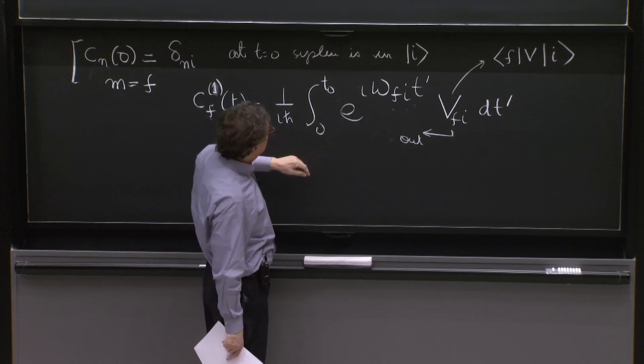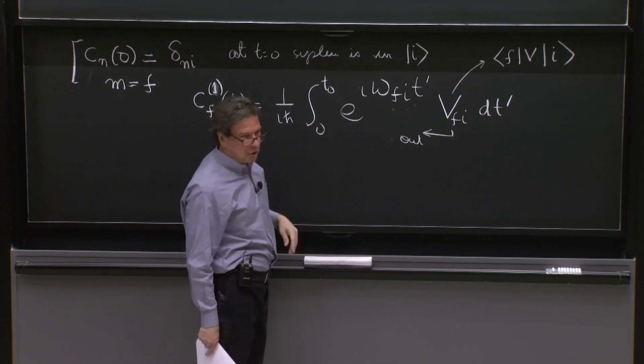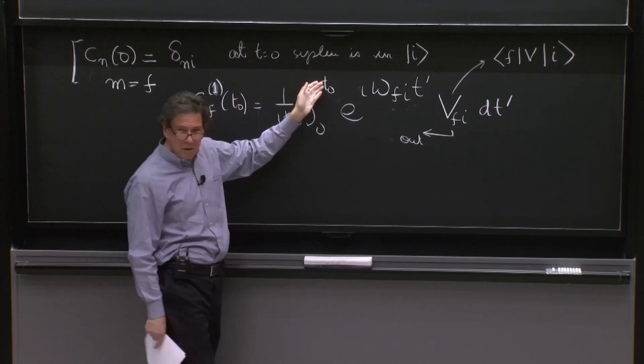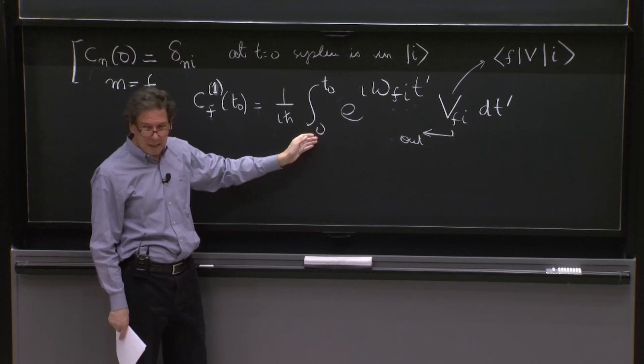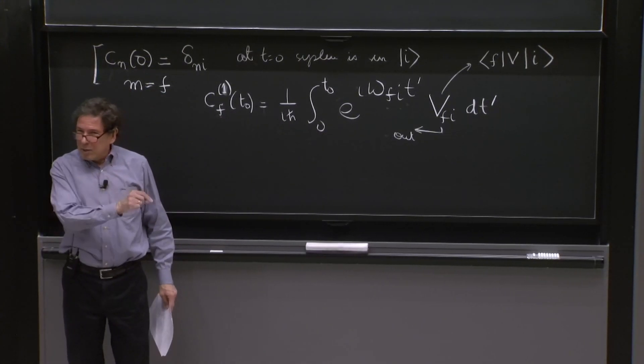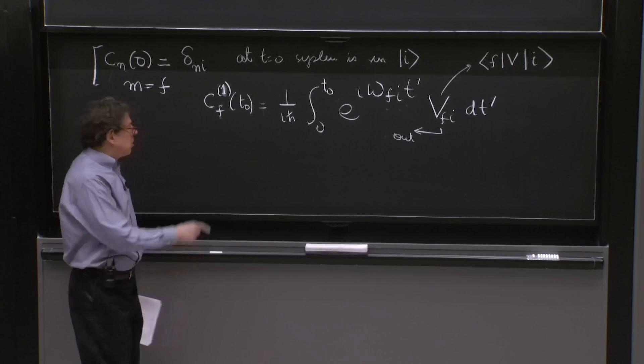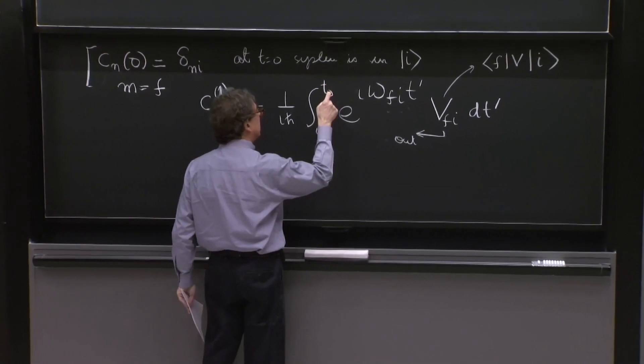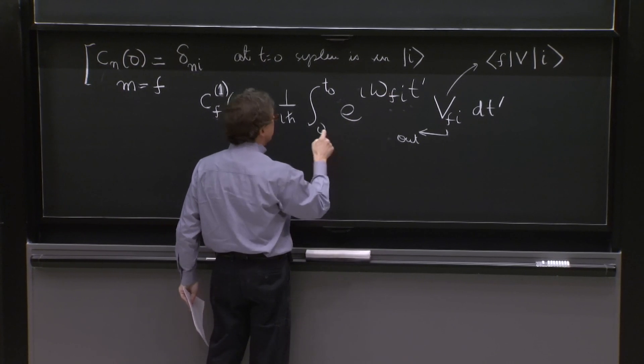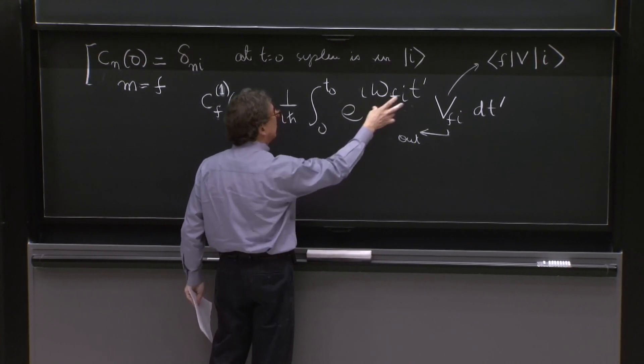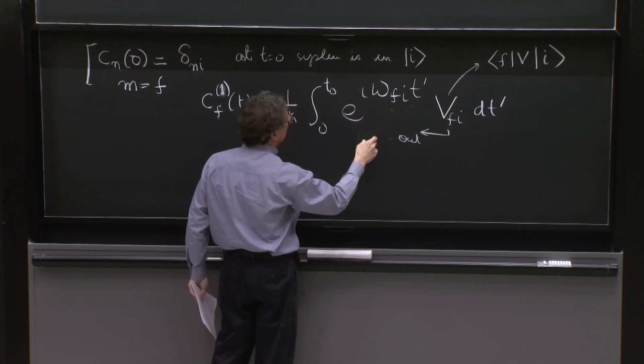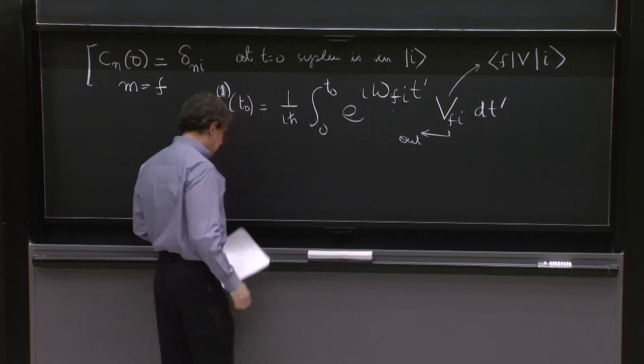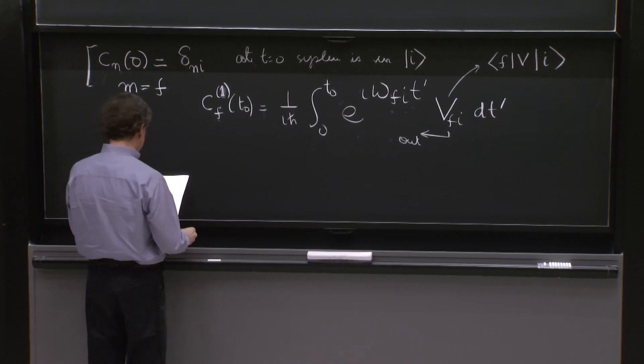When you integrate this, you get another exponential. You're going to get the exponential at t naught minus the exponential at 0. All right. So we don't want to do our integral. So I'll just write the answer. I was saying you get the exponential here at t naught minus the value at 0. Then you take half of the exponential out to form a sine.